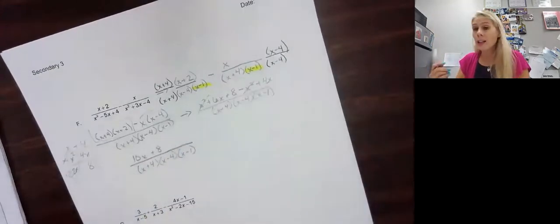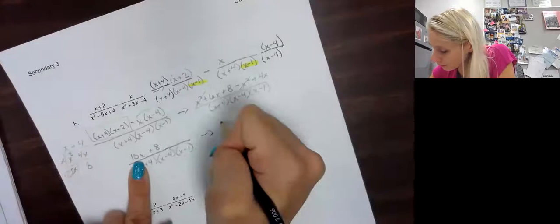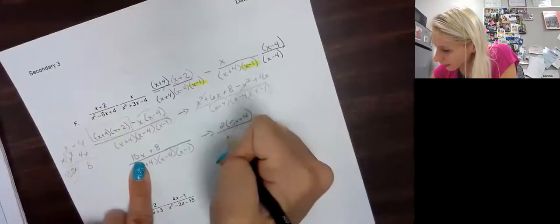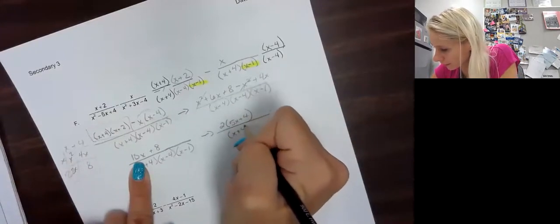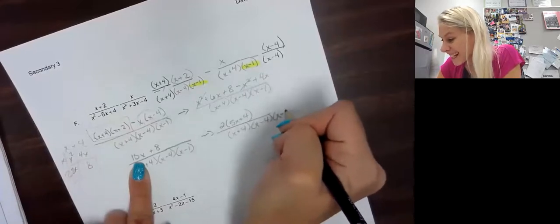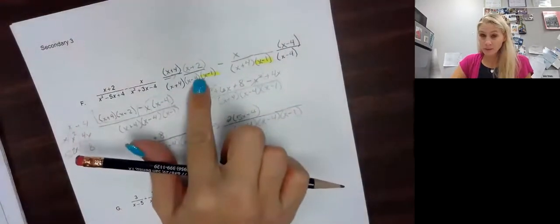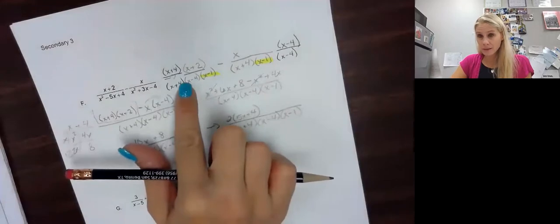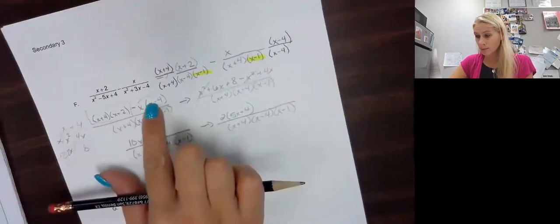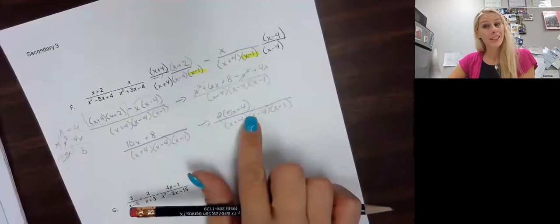Let's see if we can do any factoring to cross anything out. The numerator 10 and 8 have a common factor of 2, so I factor out a 2 to give me 2 times 5x plus 4. And as you can see with that denominator, there is nothing to cross out. This is our messy final answer. A lot of work — factor, find common denominator, put it together, multiply and distribute, combine like terms, then factor out anything you can to see if you can cross out.